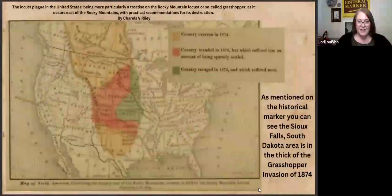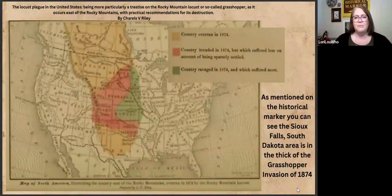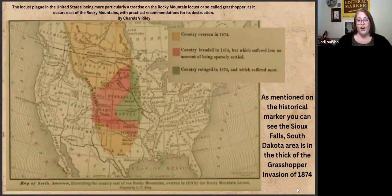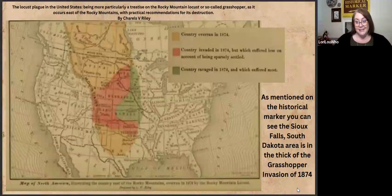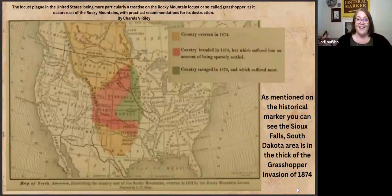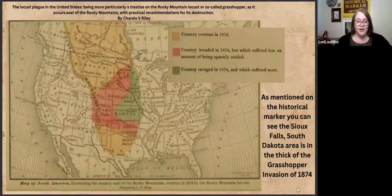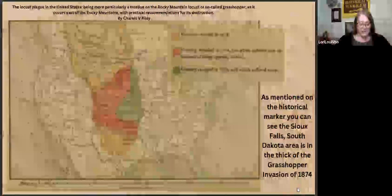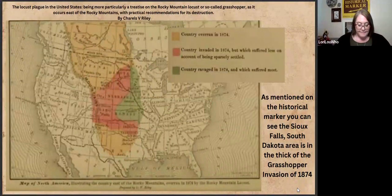One of the most important parts about the grasshopper invasion is that this is a historical marker in Sioux Falls, South Dakota, but this invasion was everywhere. It was in Canada. It was in Texas. A huge chunk of North America was affected by these grasshoppers — this was a big deal. I think that's another interesting level for me as somebody who hadn't really heard of this, to realize it was so incredibly widespread. This map shows how widespread the phenomena was.